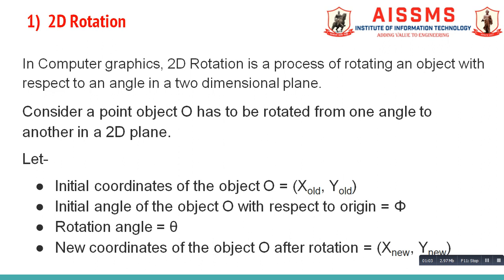Now, let us see what is 2D rotation. In computer graphics, 2D rotation is a process of rotating an object with respect to angle in 2 dimensional plane. Consider a point object O has to be rotated from one angle to another in 2D plane. In order to do this, we assume the initial coordinates of object O as X_old, Y_old, initial angle of object O with respect to origin as phi, rotation angle as theta, and new coordinates of object O after rotation as X_new, Y_new.